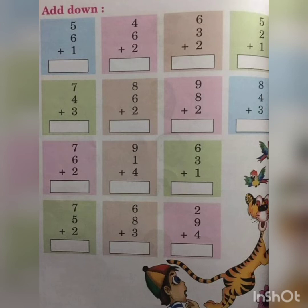Now turn to page 68 of your math's textbook and we are going to learn how to add down. But this time, there are three numbers. Now look at the first question. There are three numbers to add.